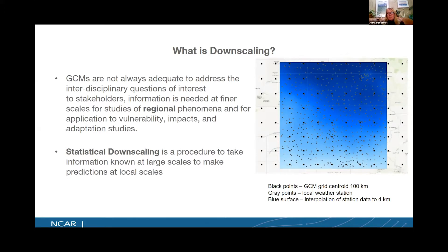Statistical downscaling is a procedure where we take information known at large scales and we make predictions at local scales. The image on the right shows you the black dots are the grid centroids from the GCM at 100 kilometer resolution. The gray dots are local weather station locations and that blue surface is an interpolation from the weather stations at 4 kilometers. So really we're trying to go from that 100 kilometer resolution down to that blue surface of 4 kilometers.